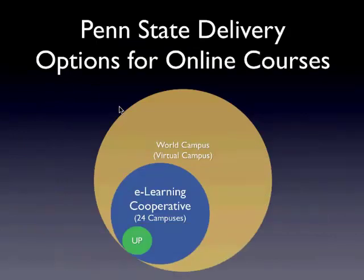Looking at the delivery mechanisms at the university, given the reach past any single campus, we have a couple of different ways of delivering online courses. Many of you are probably aware of the World Campus, which is our 25th campus. If a student is not enrolled at any one of the 24 campuses and is taking courses online, they are part of the World Campus. We also have something called the eLearning Cooperative, which allows us to deliver any one of our courses to any one of the campuses as long as they're fully online.